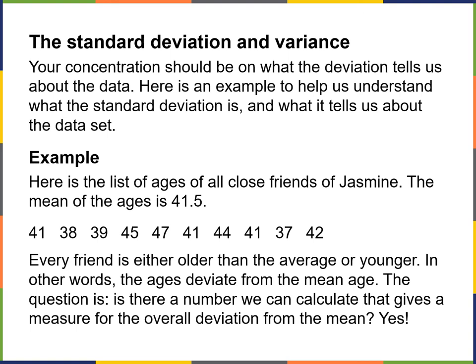Here's a list of all of the close friends of Jasmine. The mean of the ages is 41.5. Every friend is either older than the average or younger — the ages deviate from the mean age. The question is: is there a number we can calculate that gives us a measure for the overall deviation from the mean? Absolutely. It's pretty easy to calculate.